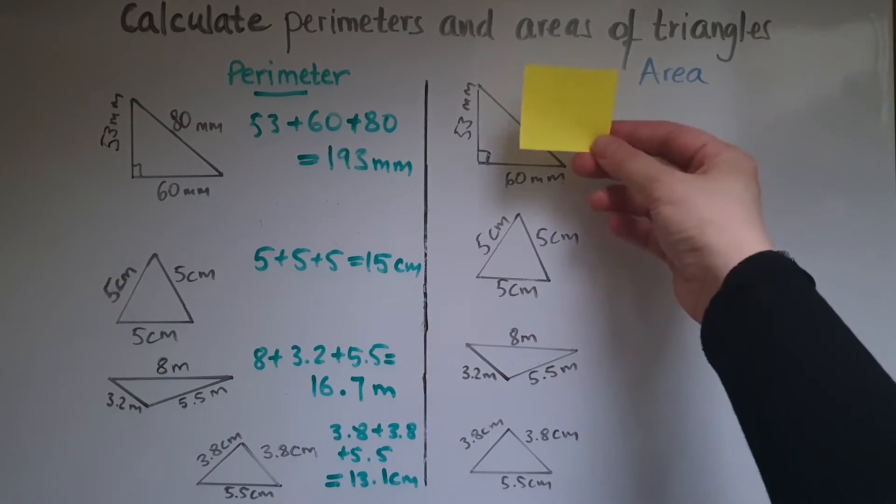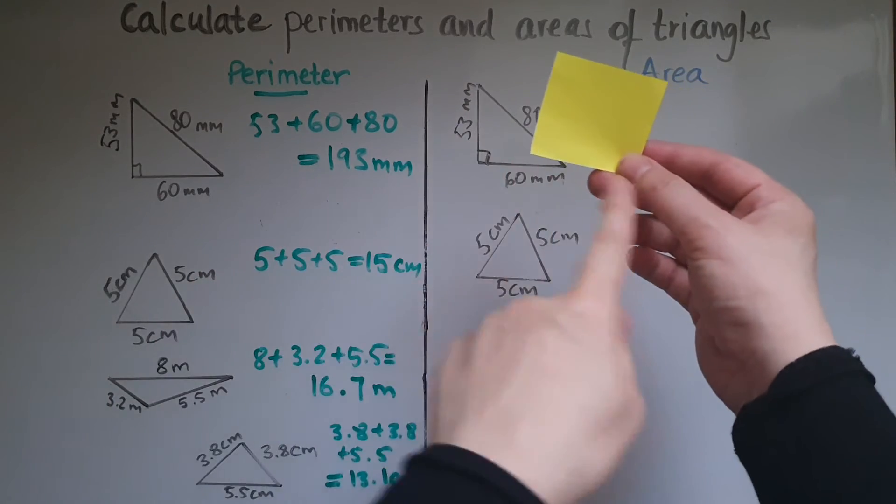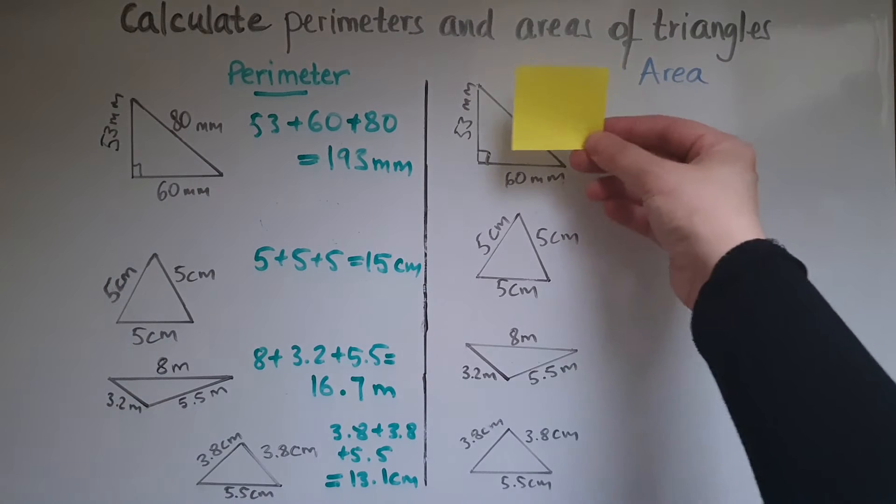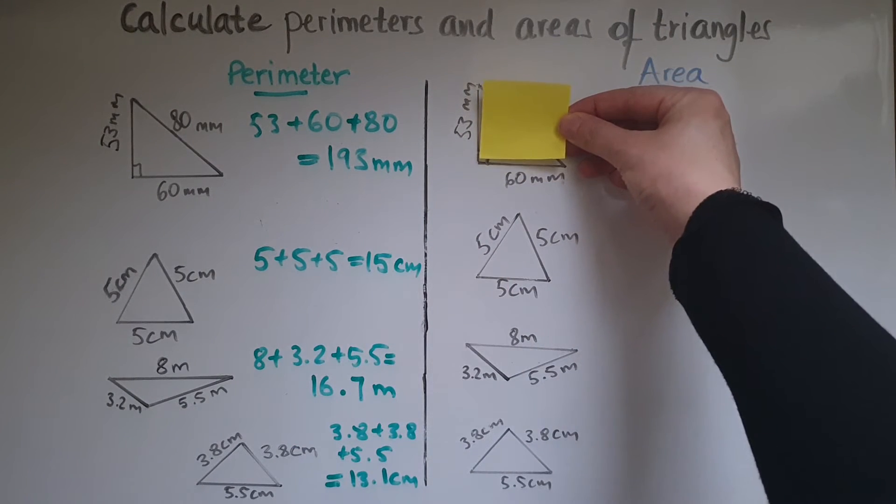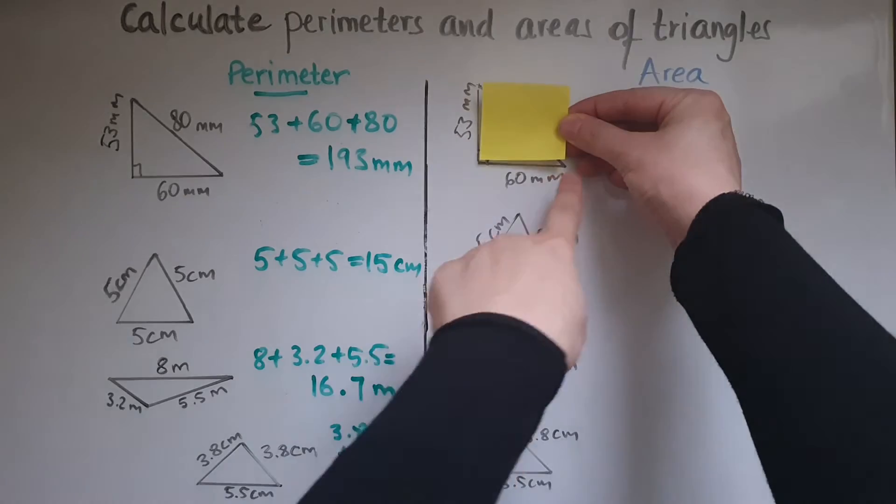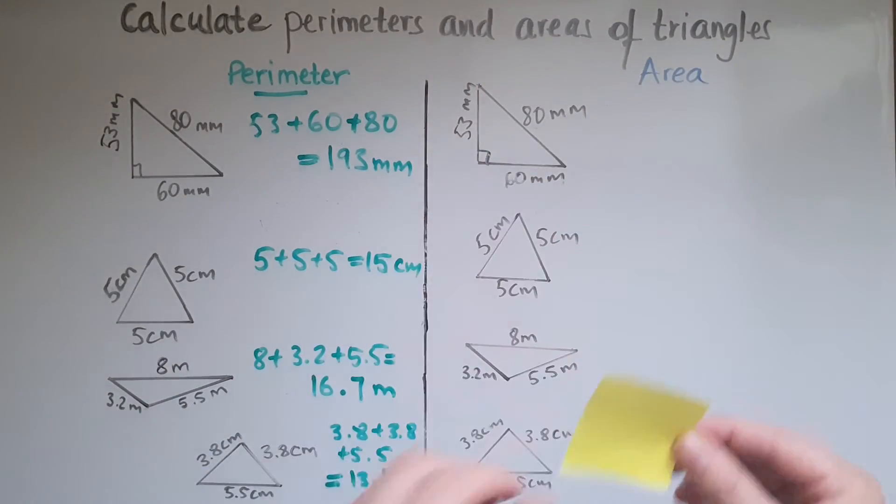So I have a rectangle, which you know the formula for its area, which is length times width. And this rectangle I'm holding has the same length and width as the triangle.